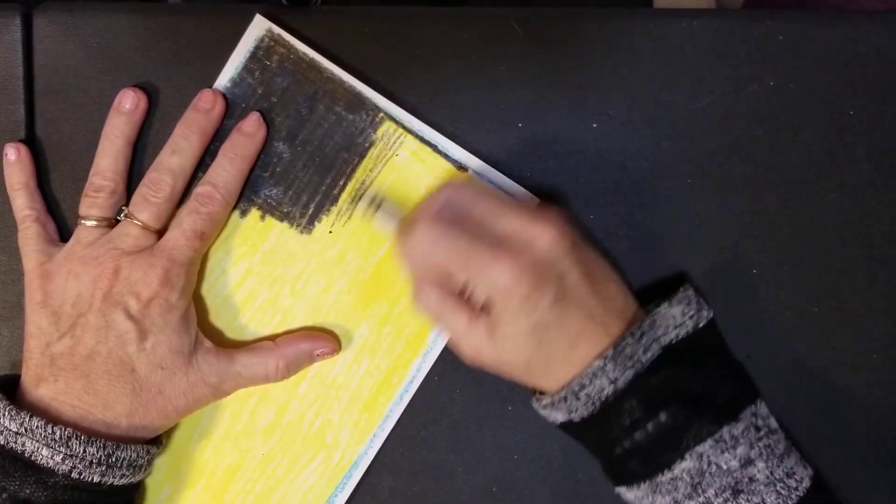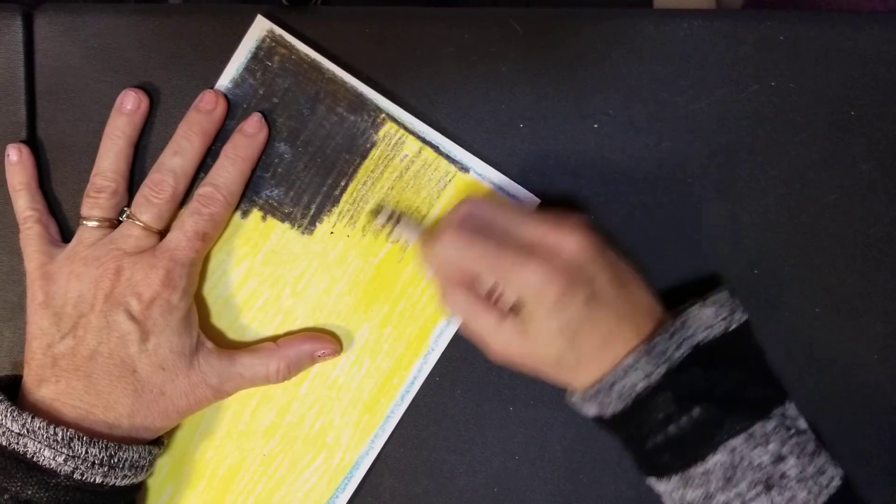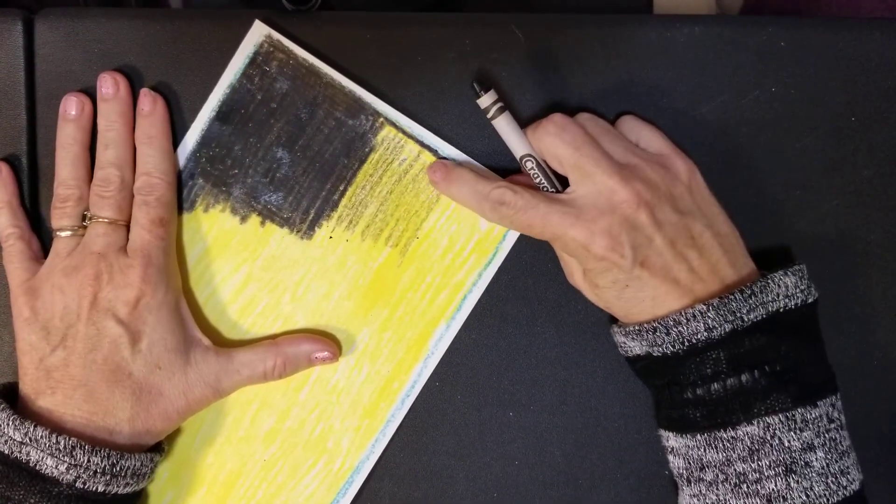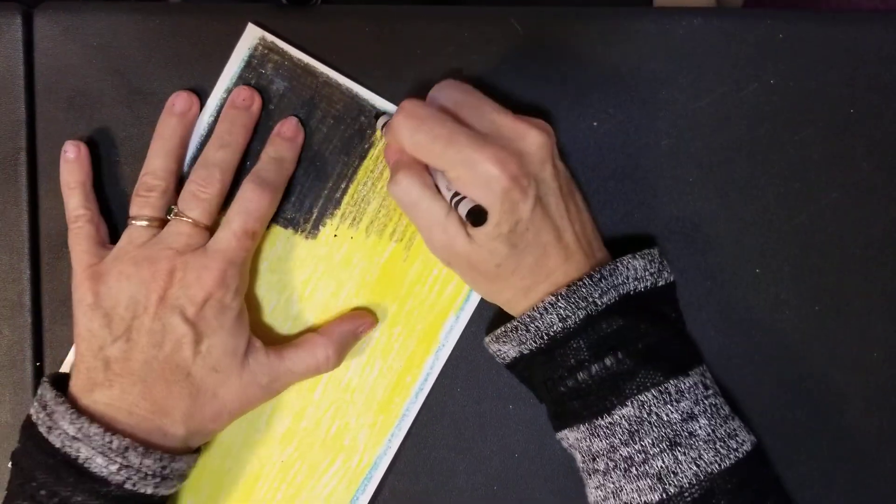If you just do it light like that, it doesn't cover up the yellow. That's not how you want it. You want it really dark and waxy so you can't see the yellow anymore.